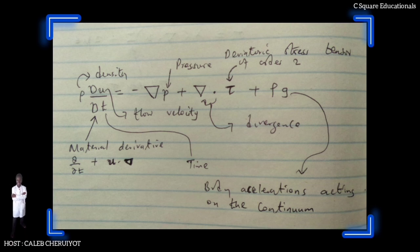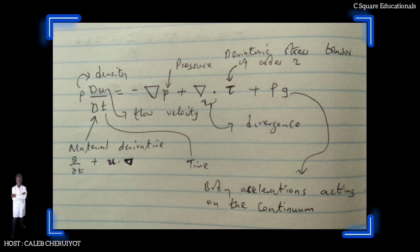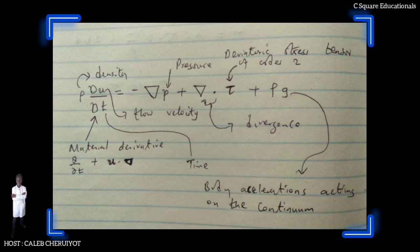Where D/Dt is the material derivative defined as ∂/∂t + u·∇. ρ is the density, u is the flow velocity, ∇· is the divergence, p is the pressure, t is time, and τ is the deviatoric stress tensor. G represents body accelerations acting on the continuum, for example gravity, inertial accelerations, electrostatic accelerations, and so on.